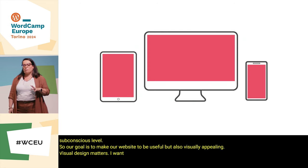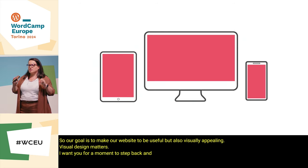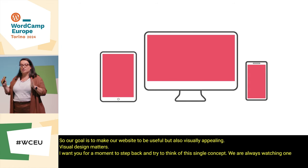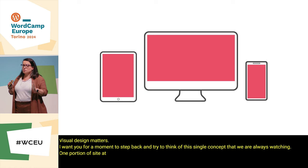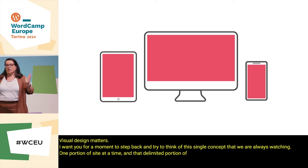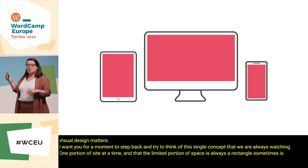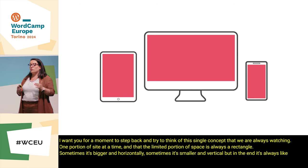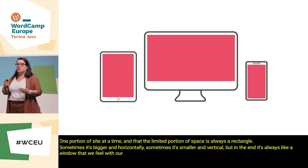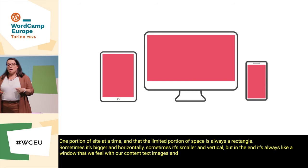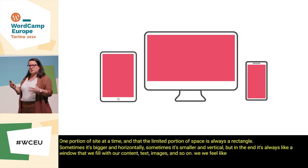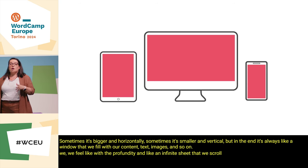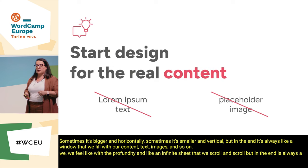I want you, for a moment, to step back and think of this single concept: we are always watching one portion of a site at a time, and that delimited portion of space is always a rectangle. Sometimes it's bigger and horizontal, sometimes smaller and vertical, but in the end it's always like a window that we fill with our content — text, images, and so on. We feel like we have an infinite sheet that we scroll and scroll, but in the end it's always a window.